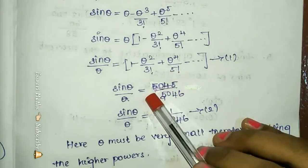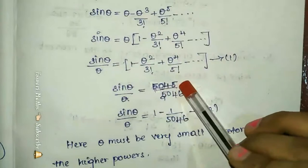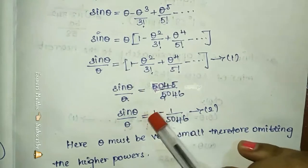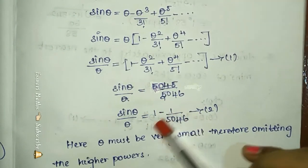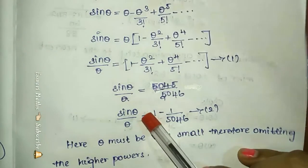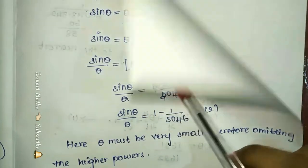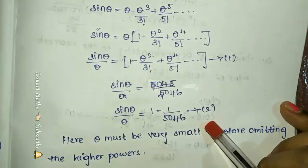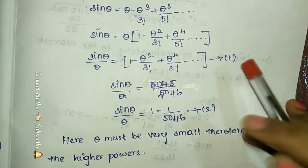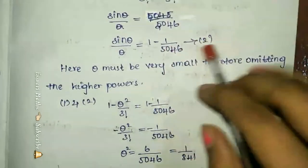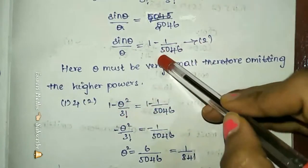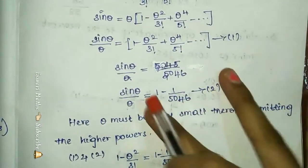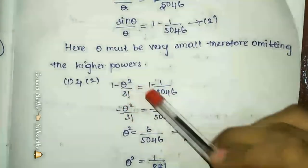This equation will be equal to 0.45. Now let's get the second equation. If theta is small, we can omit the bigger values. We take sin theta divided by theta, then sin theta by theta — so we can equate the two.